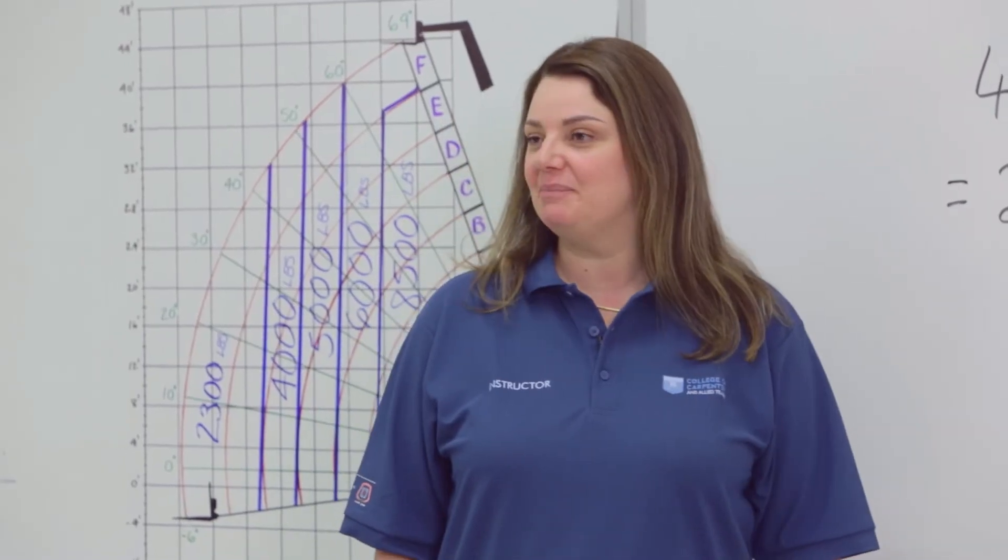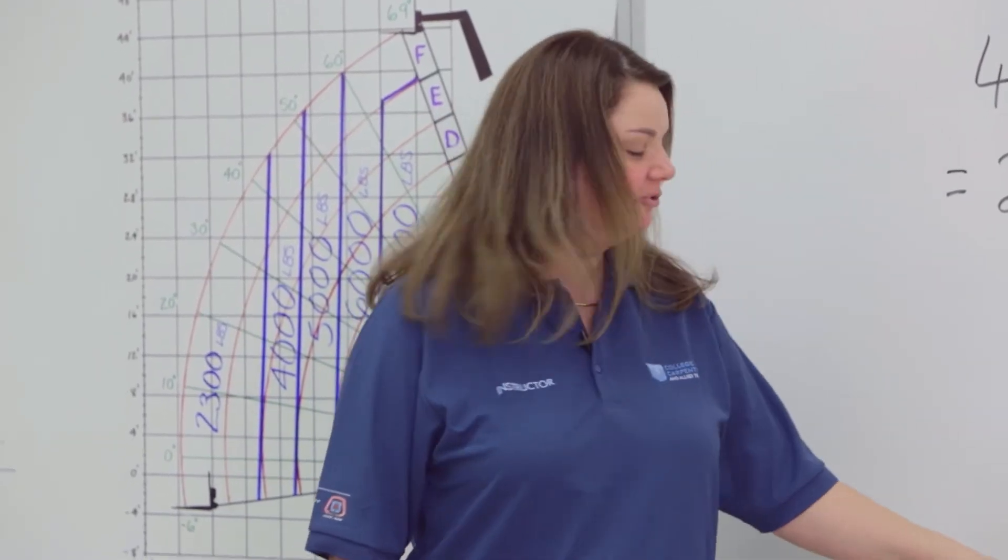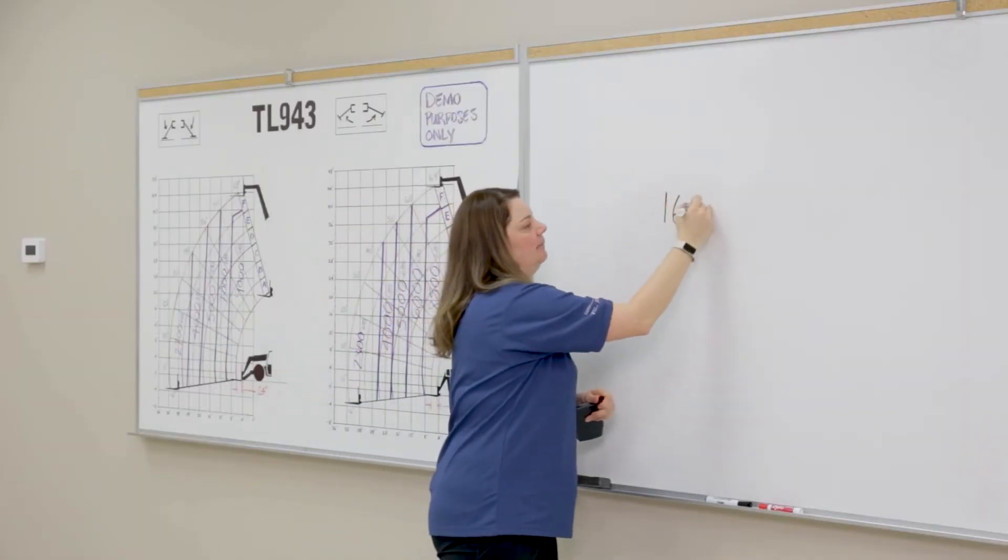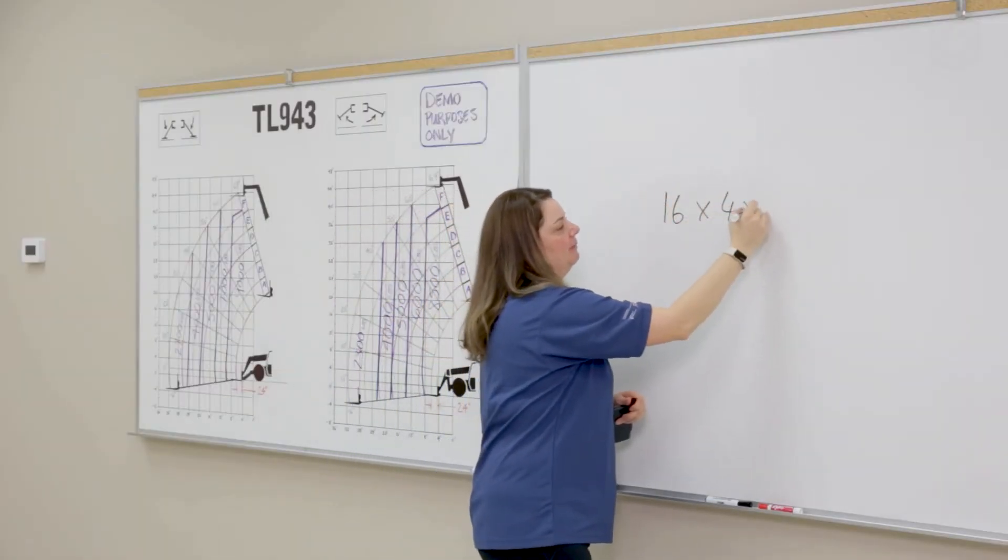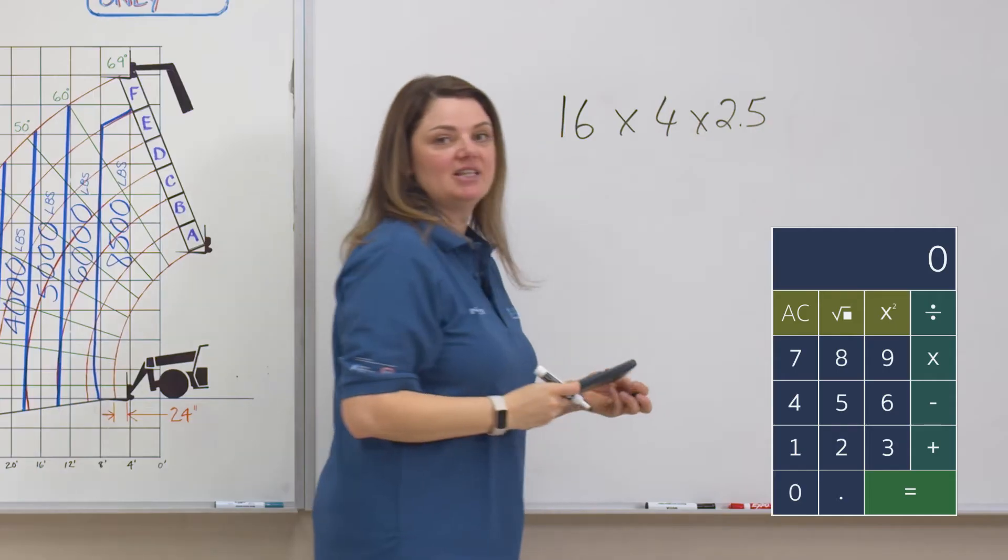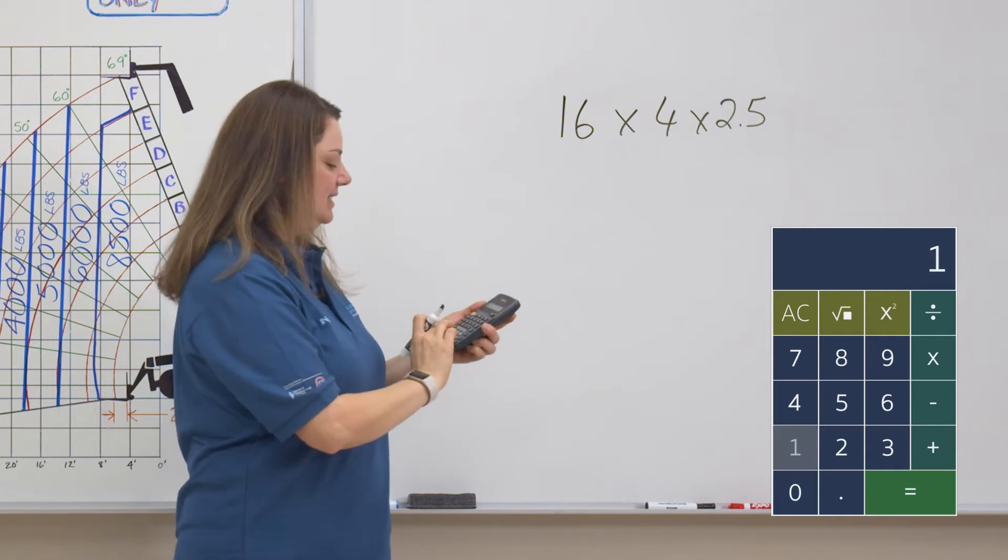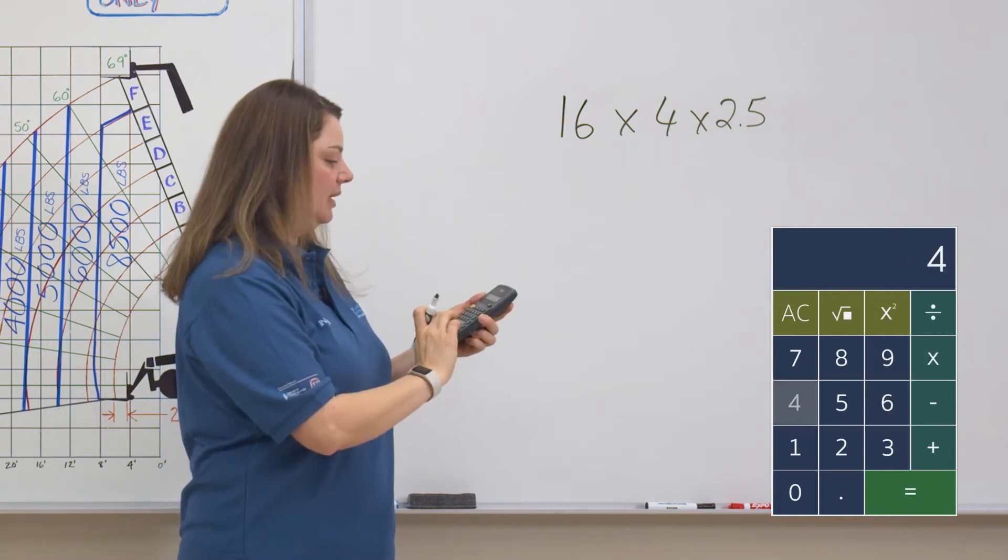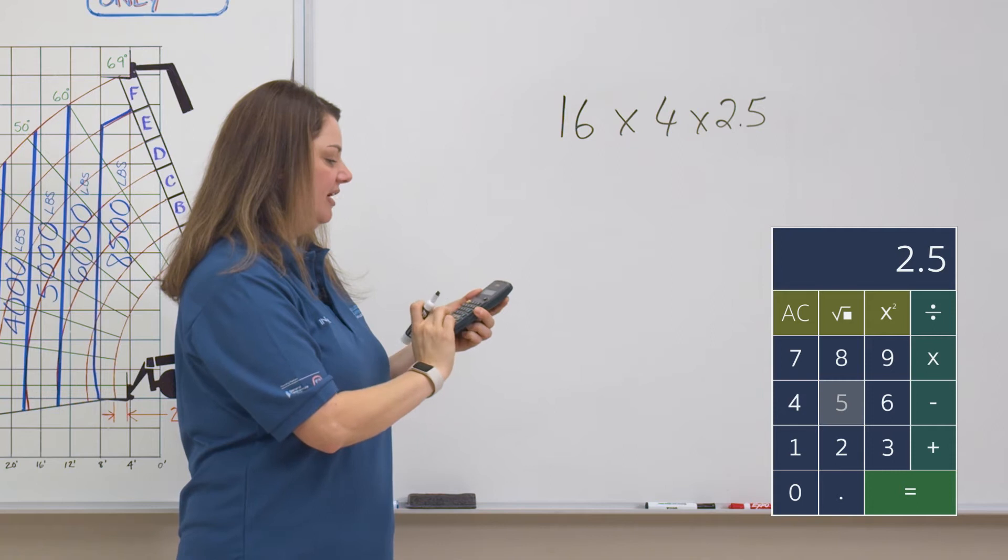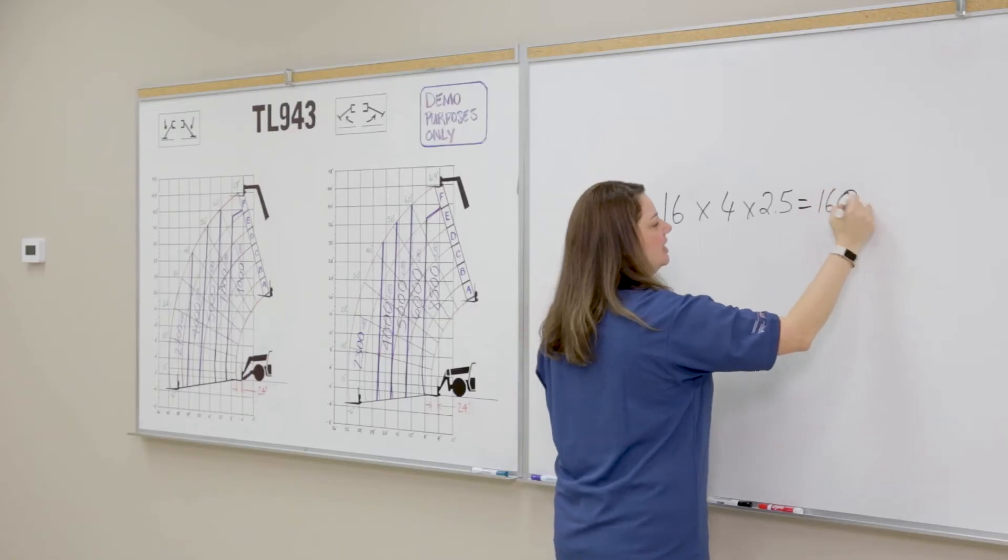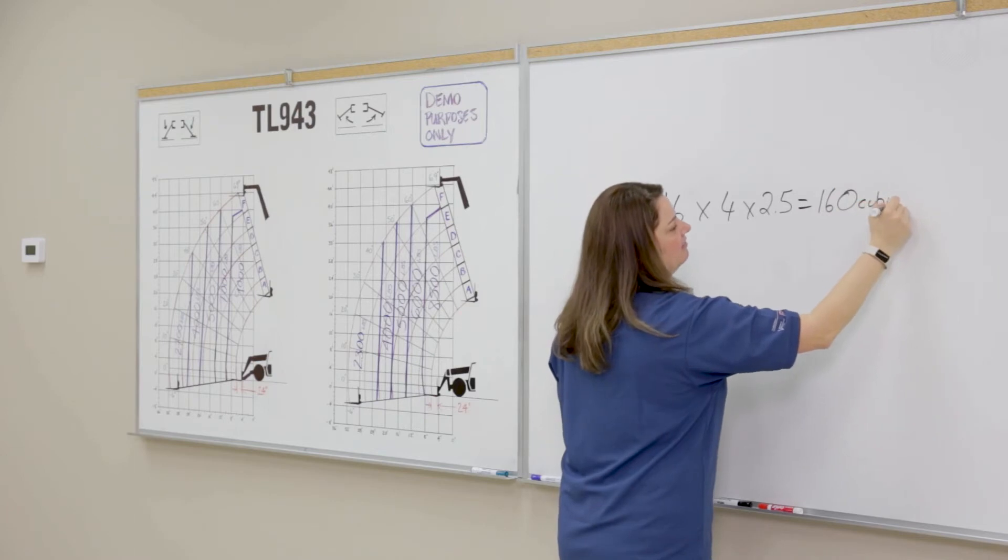In this next example, we need to lift a skid of 2 by 4 spruce. We're going to multiply 16 by 4 by 2.5 to figure out the total volume of this load. So go ahead and pull your calculators out and do the calculation with me. 16 times 4 times 2.5. And we come up with a total of 160 cubic feet.